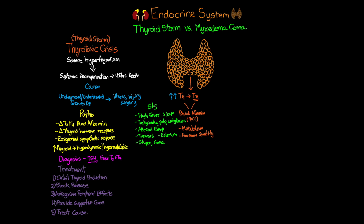To inhibit thyroid hormone production, we use antithyroid medications — primarily methimazole (Tapazole) or PTU. PTU is the preferred medication due to its ability to inhibit the conversion of T4 into active T3 in the periphery. However, PTU carries a high risk of liver injury and possible liver failure, so it must be used carefully.